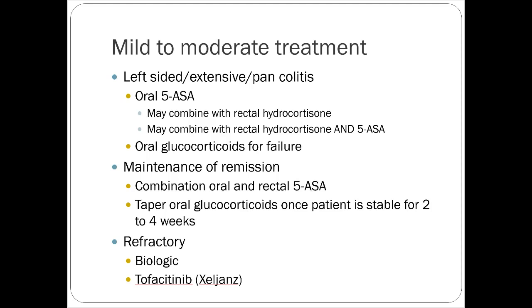For mild to moderate left-sided, extensive, or pancolitis, go straight to oral 5-ASA drugs, and you can combine with rectal formulations if tolerated — though compliance with rectal administration can be a challenge. If the patient fails the 5-ASA regimen, escalate to glucocorticoids. If refractory to those therapies, move to the moderate-to-severe Crohn's algorithm and consider TNF alpha agents. Tofacitinib (Xeljanz) is also an option for UC.